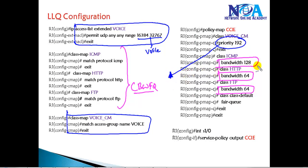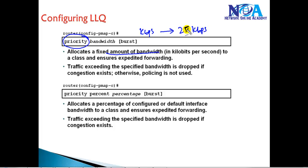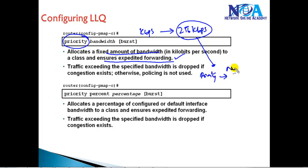Priority traffic is higher priority than other classes. When you define the priority option with a specific KBPS value — for example, 256 kbps — it gives that bandwidth as priority and ensures it is forwarded immediately. Any traffic exceeding this in a congestion scenario: if there is no congestion, excess traffic is sent as normal traffic without prioritization. But if there is congestion, it implements strict policing and drops the excess traffic.